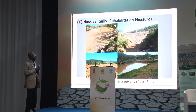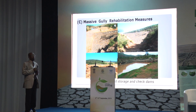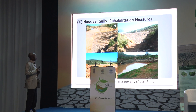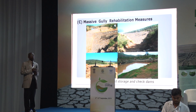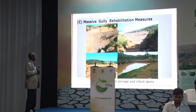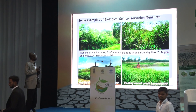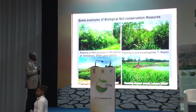Gully erosion is another major problem of land degradation in Ethiopia, causing serious damage to productive land. The project implemented massive gully rehabilitation measures such as sediment storage dams, check dams, and other vegetative and biological soil conservation measures, in order to rehabilitate gullies, make them more productive, and increase land available for cultivation and production.